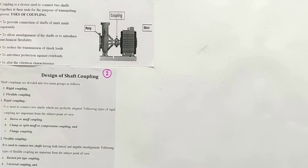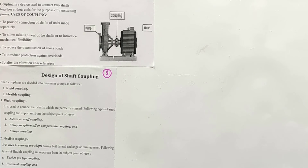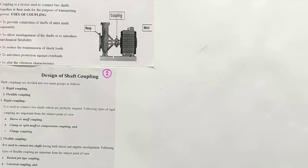The basic types are rigid and flexible coupling. Rigid coupling means perfect alignment between the two shafts is required — misalignment cannot be tolerated, and any misalignment may cause breakage. Types of rigid coupling include muff coupling, clamp coupling, and flange coupling. In our syllabus, we are going to study rigid flange coupling.